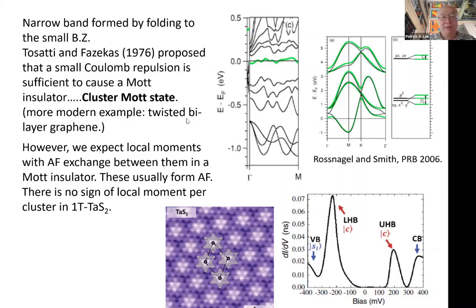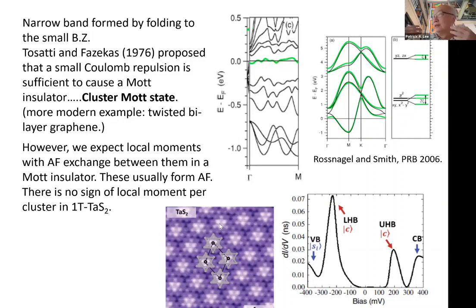I would call this class of material a 'cluster Mott insulator.' You can now see these distortions directly with STM — the 13-site unit cell is visible. However, if this is a Mott insulator, we should expect local moments and Curie-Weiss behavior, and then perhaps a phase transition at low temperature. But there is no sign of local moments and no Curie-Weiss behavior.